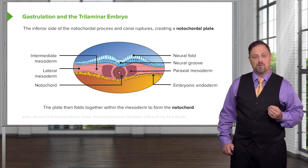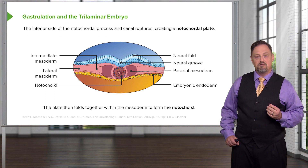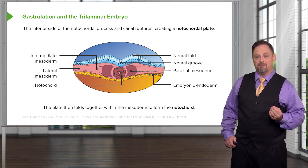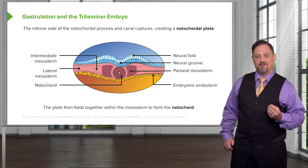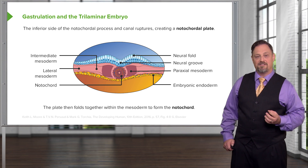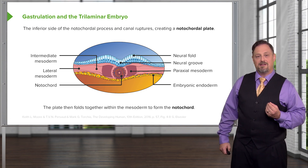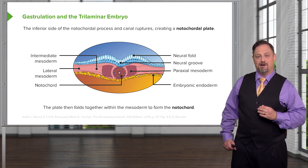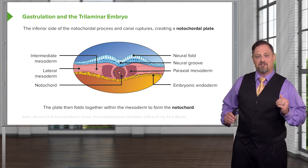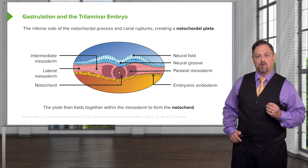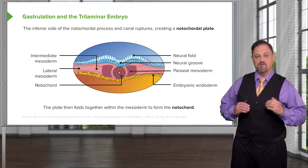At this point, the notochord is going to be a major factor in driving further development. The notochord only becomes the central area of our intervertebral discs and doesn't contribute much structurally to the adult. But during this early stage of development, the signals it releases drive important developmental sequences forming our central nervous system and musculoskeletal system. In particular, the ectoderm above the notochord will thicken, and on either side there will be distinctive neural folds that develop with a neural groove in between.